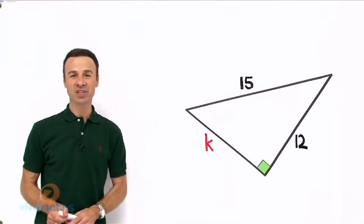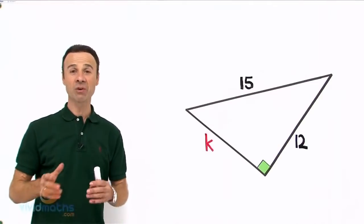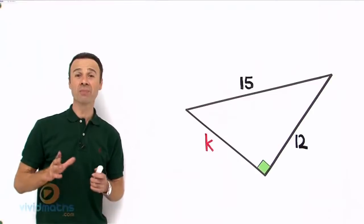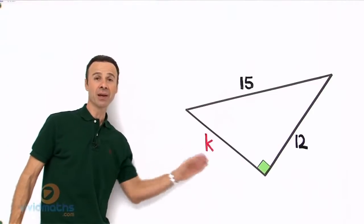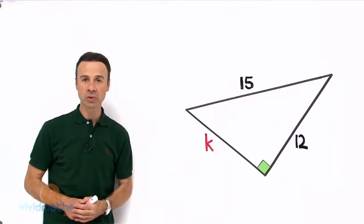Hi guys, in this example we're going to be using Pythagoras' theorem to work out the missing pronumeral on this right-angled triangle.